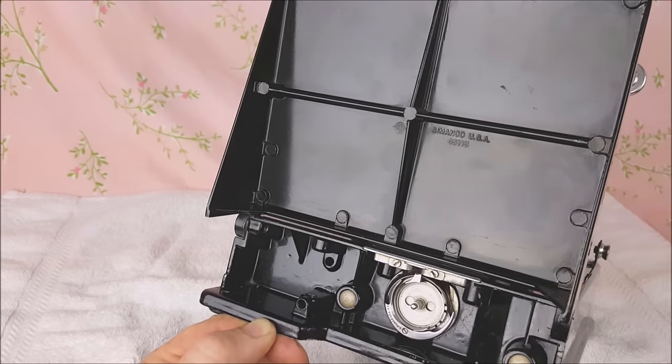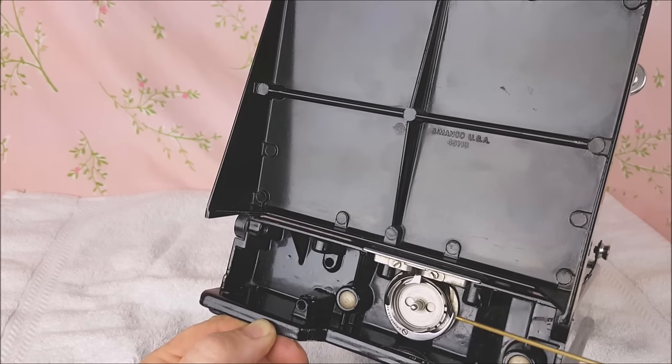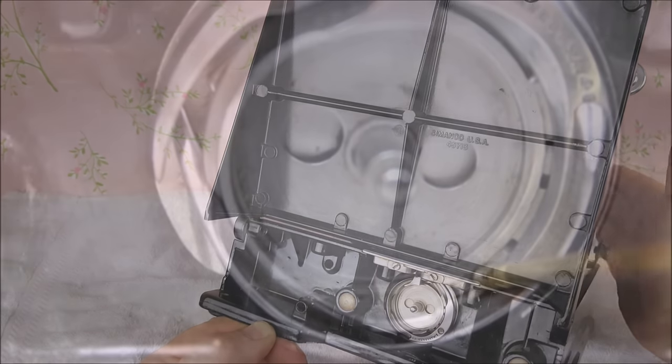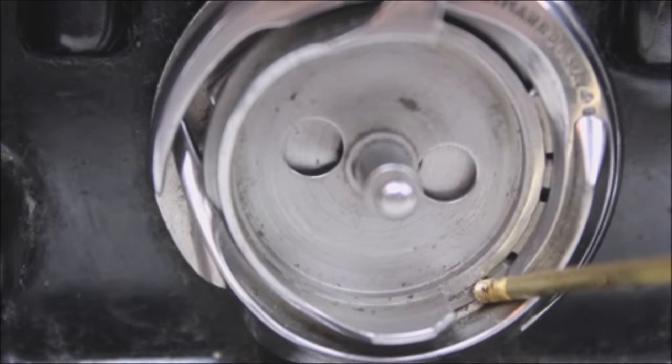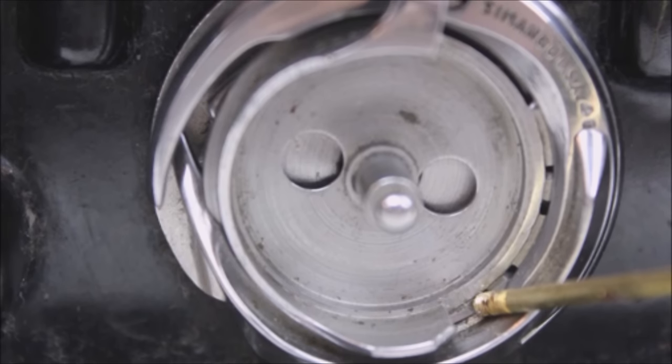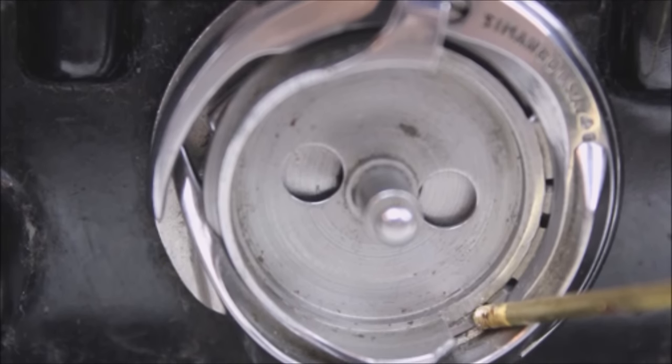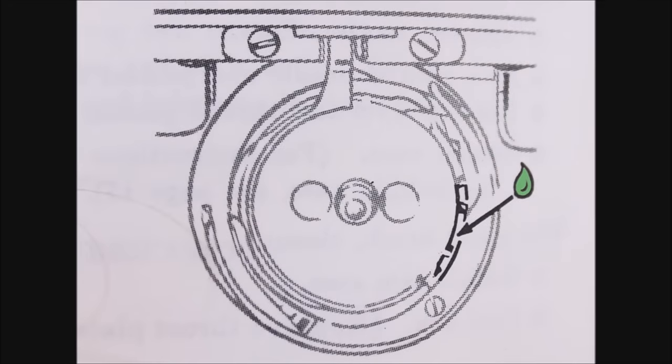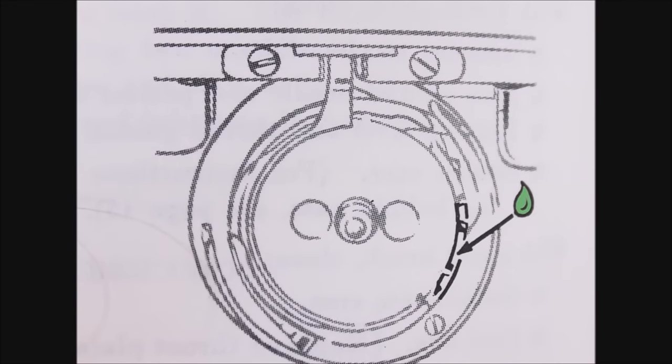Now we come to the hook assembly. You'll notice in your diagram that there is a green dot on this. It means it gets one drop of oil every day that you use your machine. And this is two pieces of metal, high speed, a lot of friction there. Definitely will help to keep that properly oiled. Just one drop is all it needs.